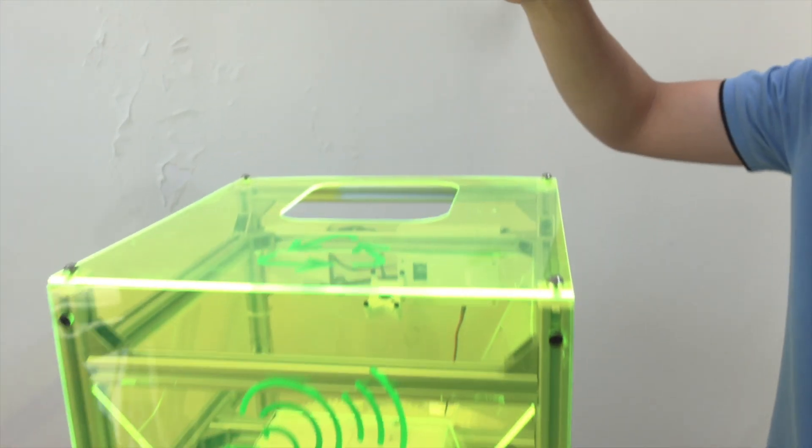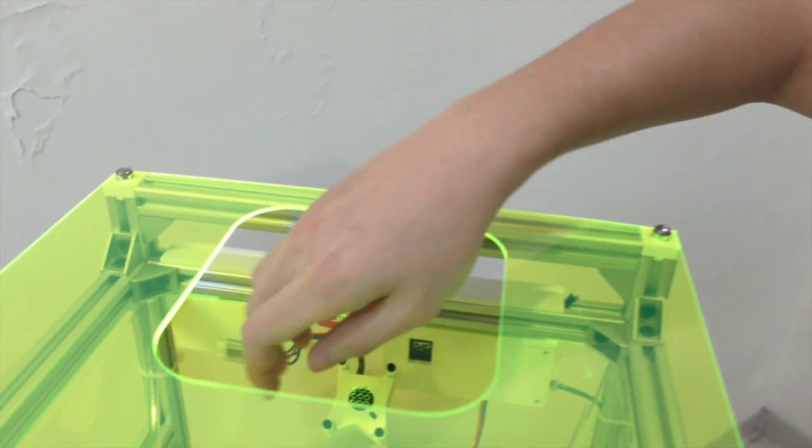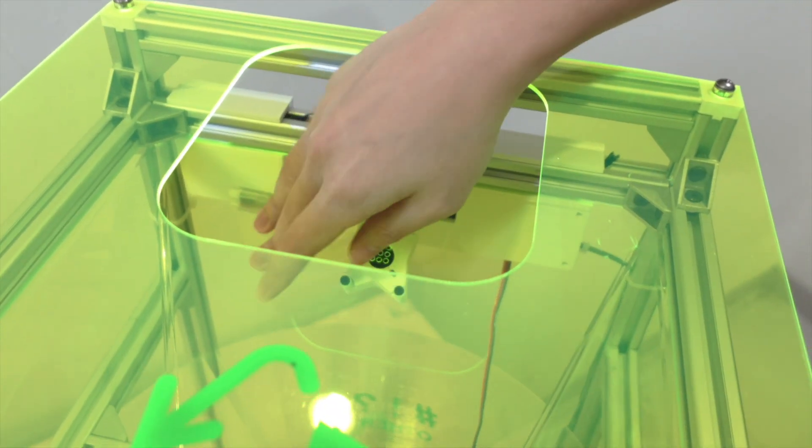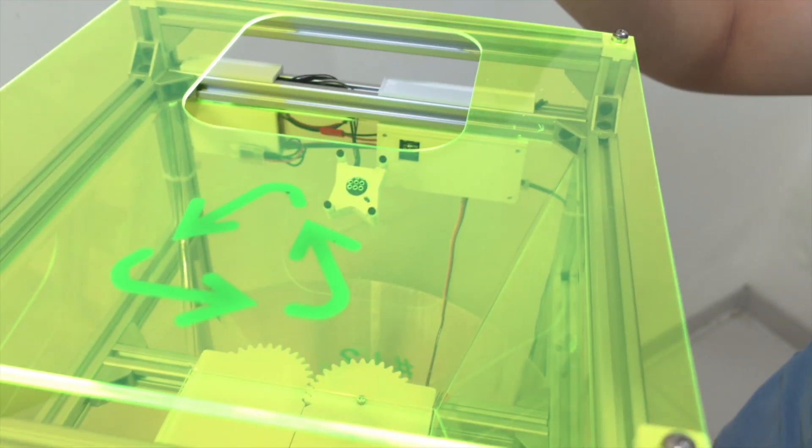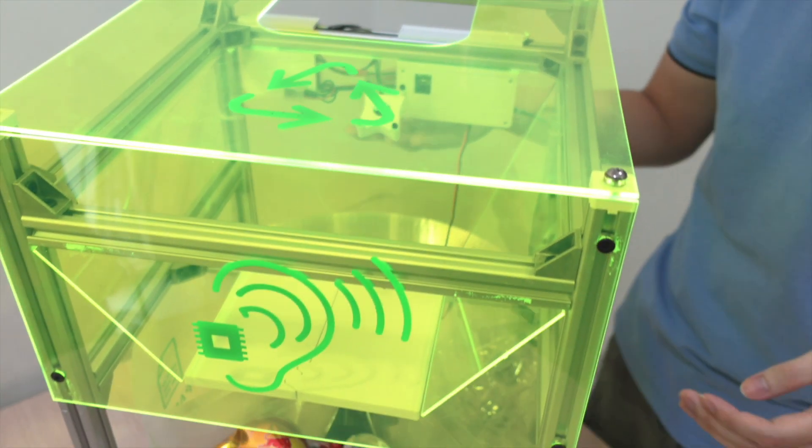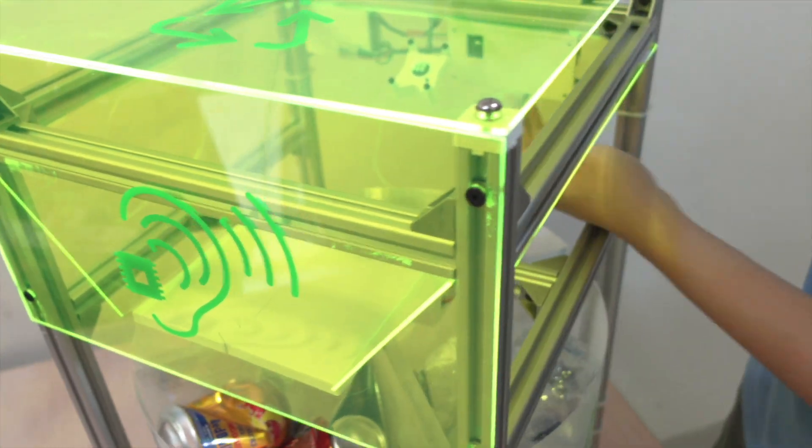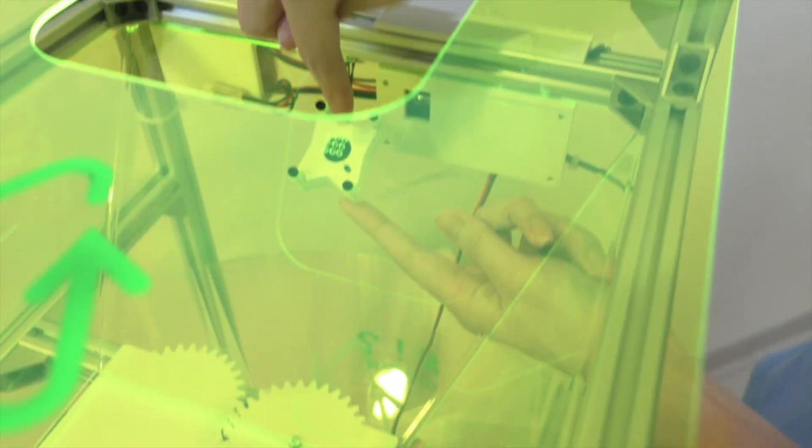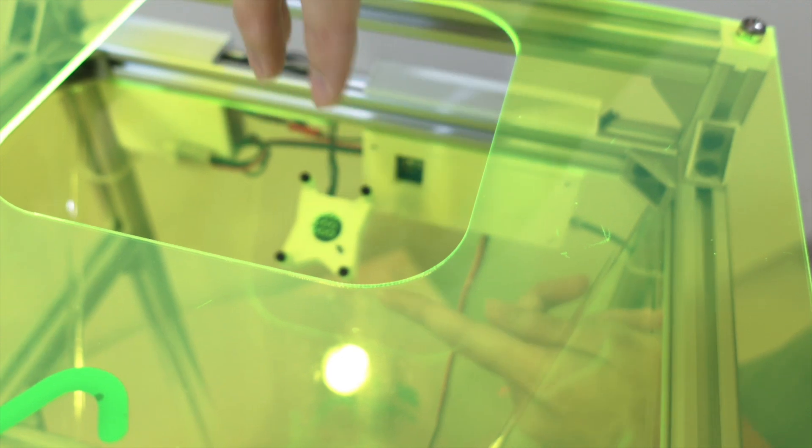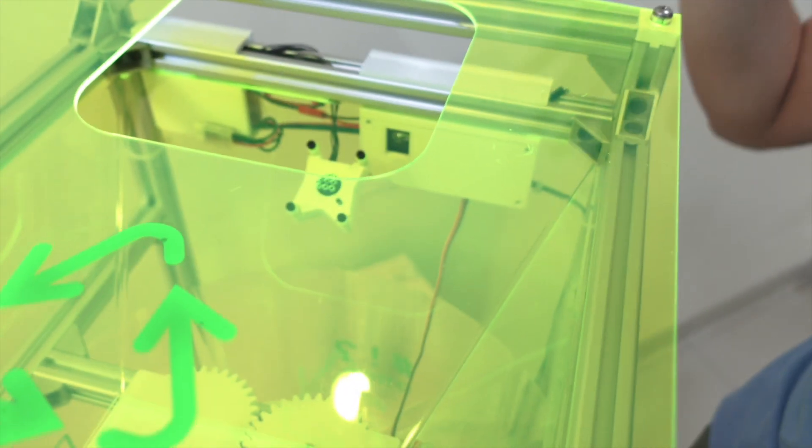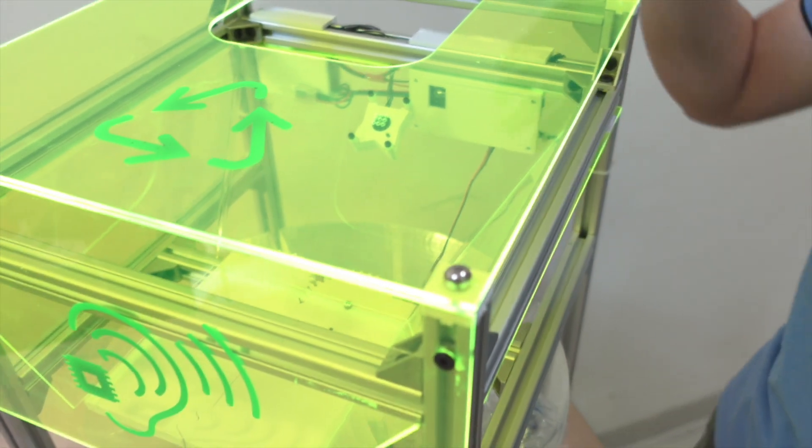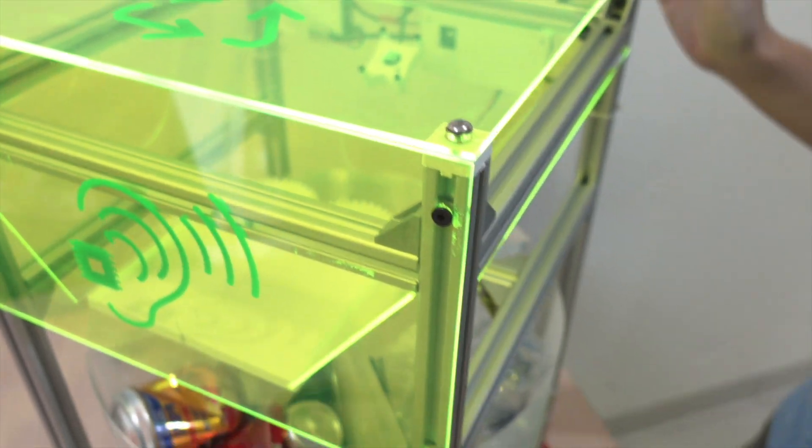The way it works is it detects the object when the object falls into the surface. It will create sound, and that sound will be captured by the microphone here, which is actually Arduino Nikola Voice, and it will run an inference that will classify what kind of object is being thrown at it.